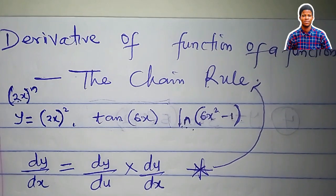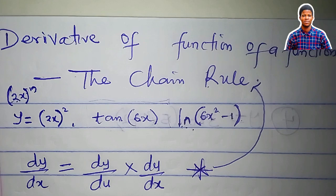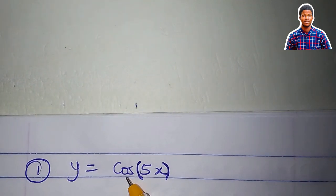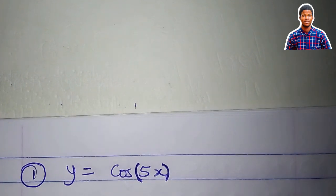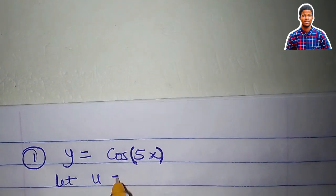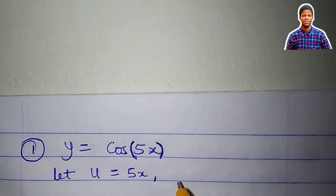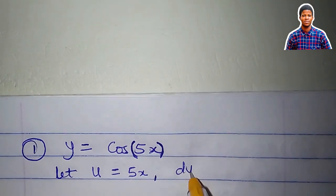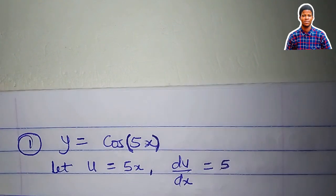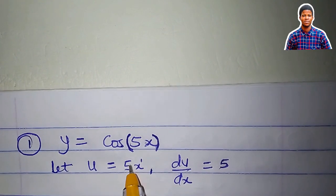Let's apply the chain rule to obtain derivatives of functions. We'll start with y = cos(5x). Here we have a trigonometric function and the inner function is 5x. We make a substitution: let u be equal to 5x. Then du/dx — differentiate 5x to get 5. Remember the power rule: 1 times 5 is 5.